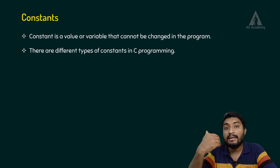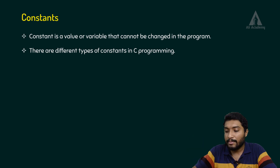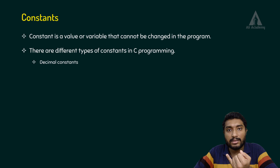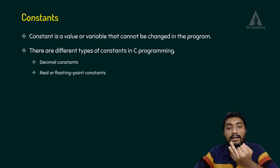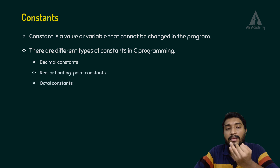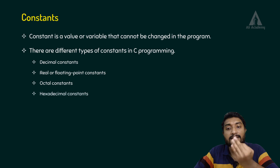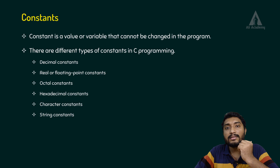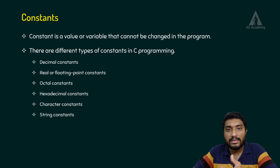Constants are of different types in C programming language. The different types of constants are: first, decimal constants; then real or floating point constants; then octal constants; hexadecimal constants; then character constants; and then string constants.